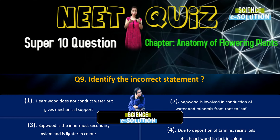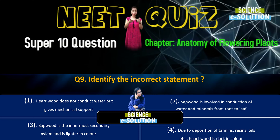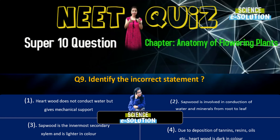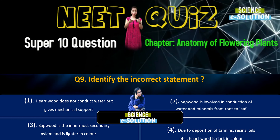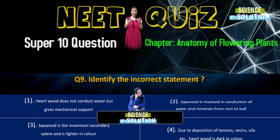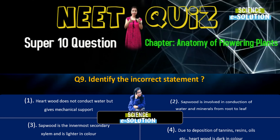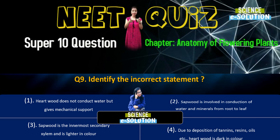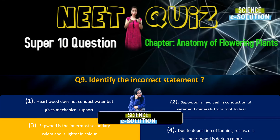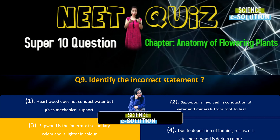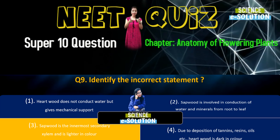Question number six: Secondary xylem and phloem in dicot stem are produced by — apical meristems, axillary meristems, phellogen, or vascular cambium? Secondary xylem and phloem in dicot stem are produced by vascular cambium. Option number four.